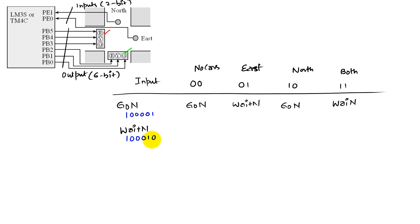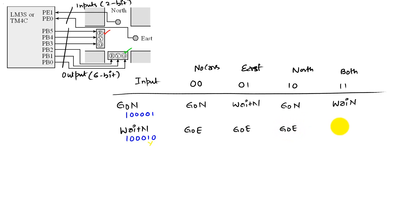Wait north is an in-between state. We're going to wait in this state and after some time transition to the obvious state, which is giving access to the other direction. So we go east on any input: if there are no cars we go east, if there are cars in the east direction we go east, if there are cars in the north direction we still go east because we've just come from that state.